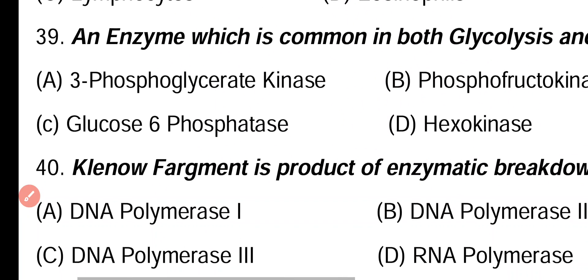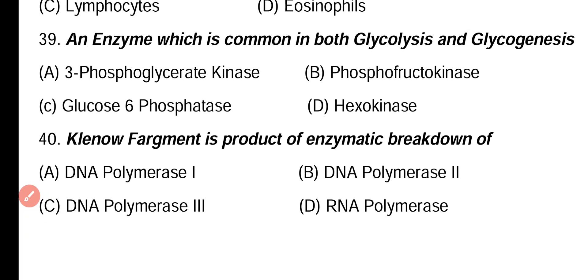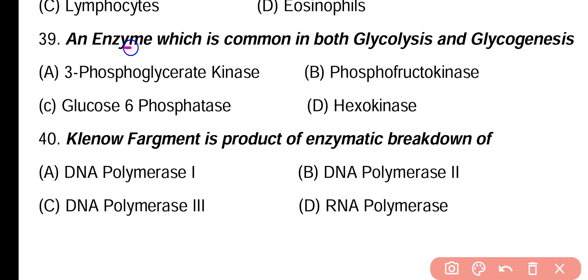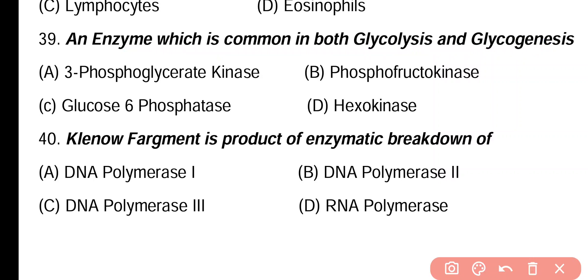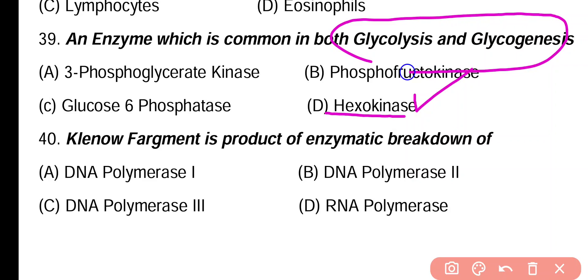Question 39. An enzyme which is common in both glycolysis and glycogenesis: 3-phosphoglycerate kinase, phosphofructokinase, glucose 6-phosphatase, hexokinase. Correct answer is option D. Glucokinase or hexokinase is the enzyme common in both glycolysis and glycogenesis.